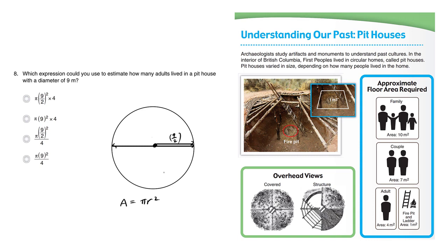When we're talking about this particular pithouse with a radius of 9 over 2, the area is going to be π r², which is π(9/2)².